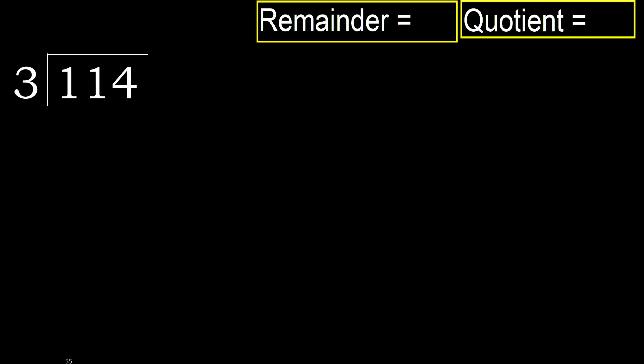114 divided by 3. 1 is less, therefore next. 11 is not less, therefore work with 11. 3 multiplied by which number is nearest to 11 but not greater?